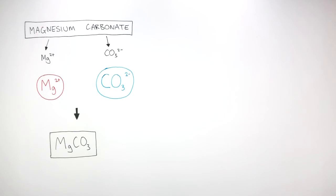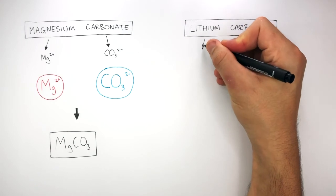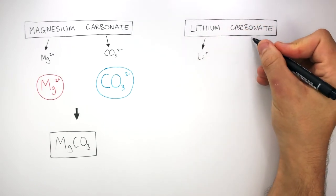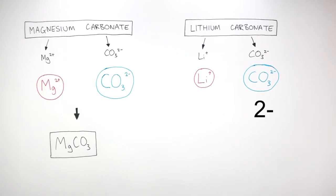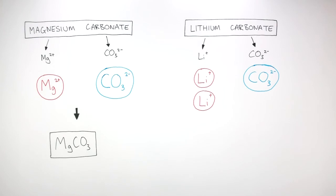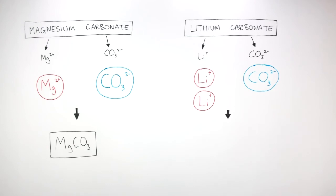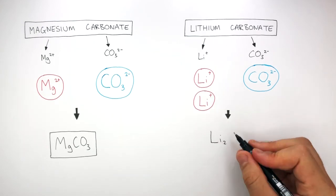We're now going to figure out the chemical formula of lithium carbonate. Lithium is in group 1, so it always has a charge of Li+. Carbonate is always CO3 2-. When we write out each ion, Li+ and CO3 2-, we can see 1+ and 2- has an overall charge of 1-. Therefore, 2 lithium ions are needed, as 2+ and 2- gives an overall charge of 0. So we write the chemical formula as Li2CO3.